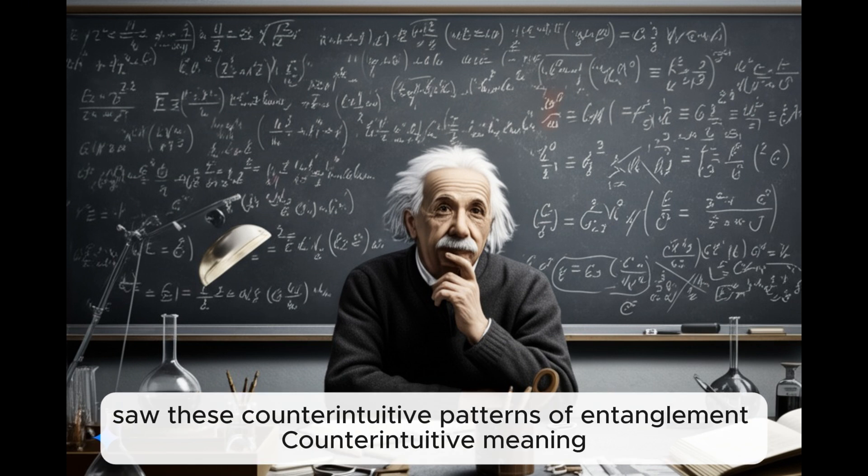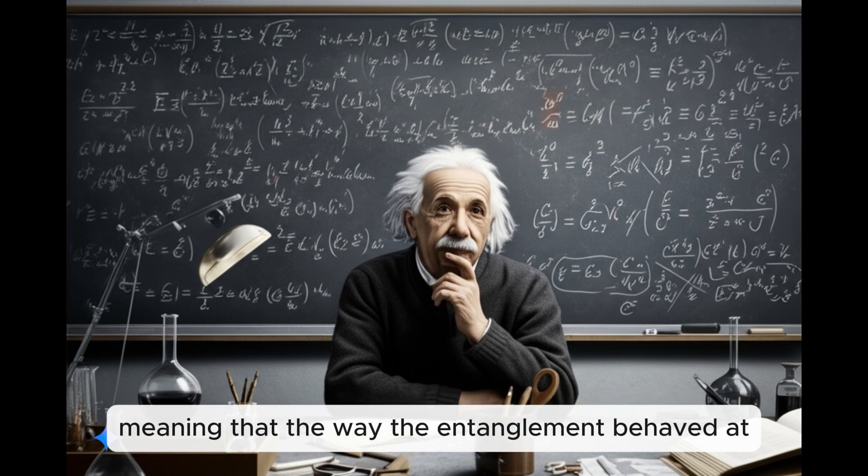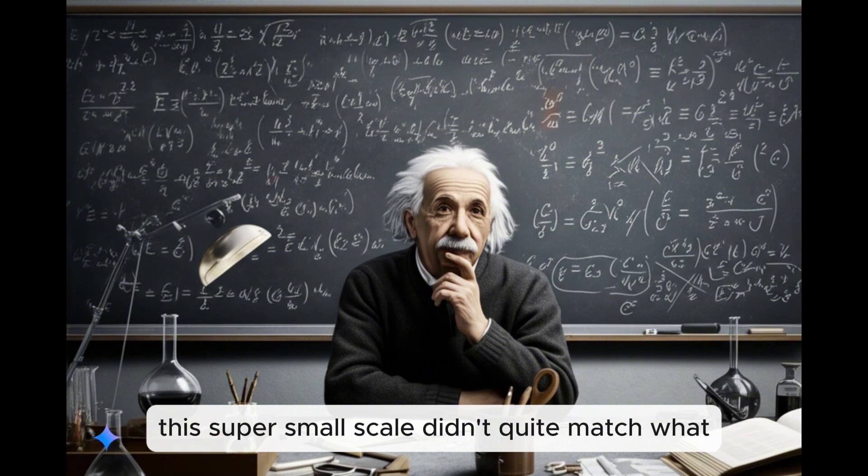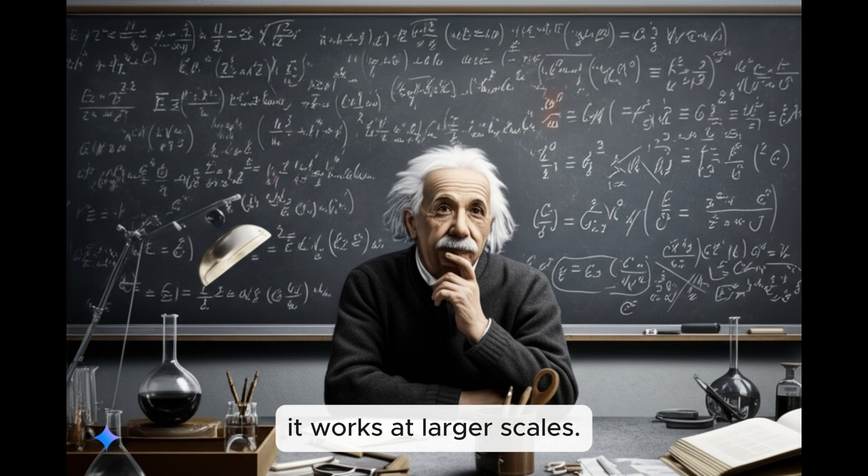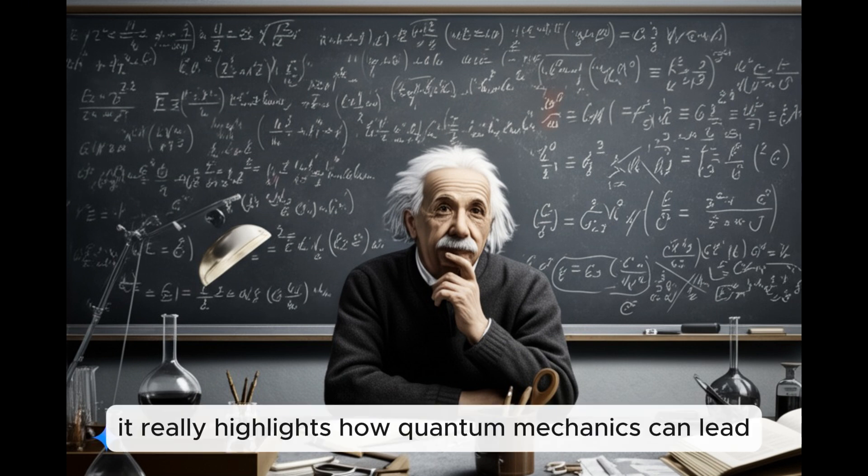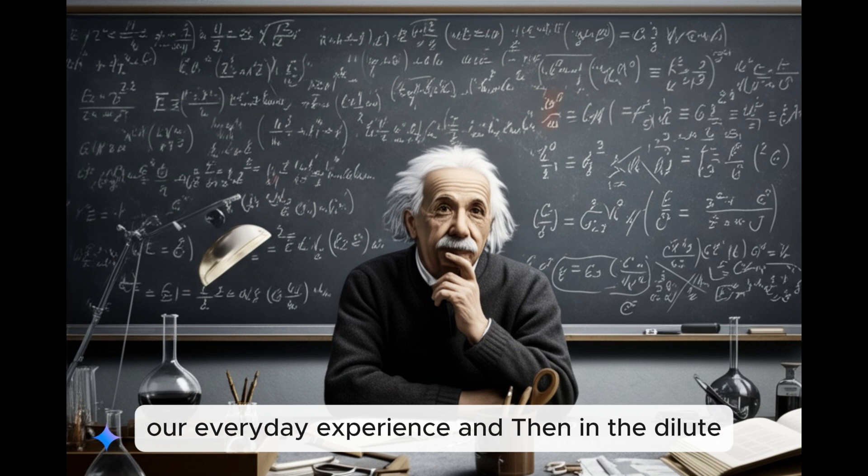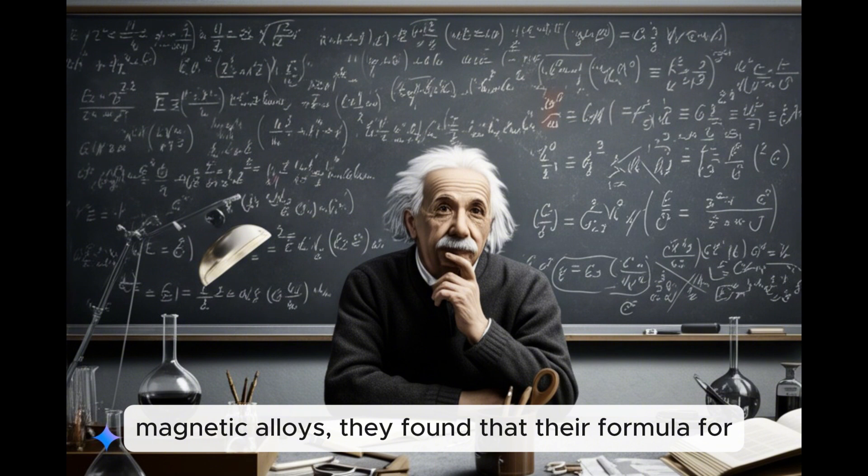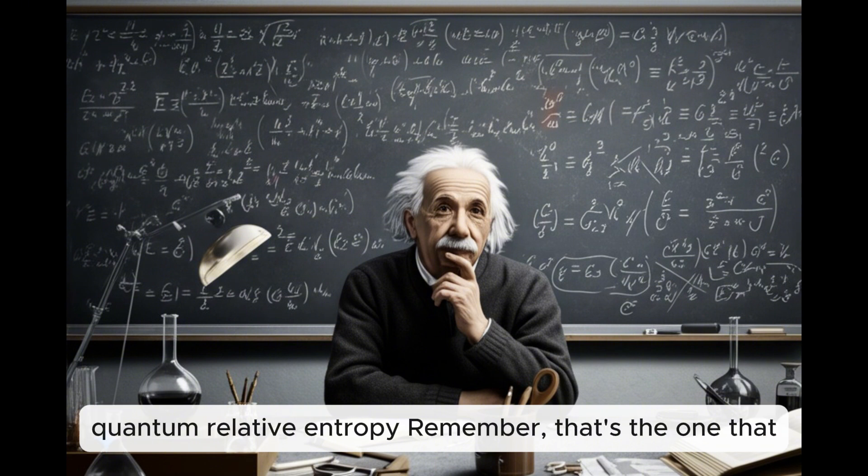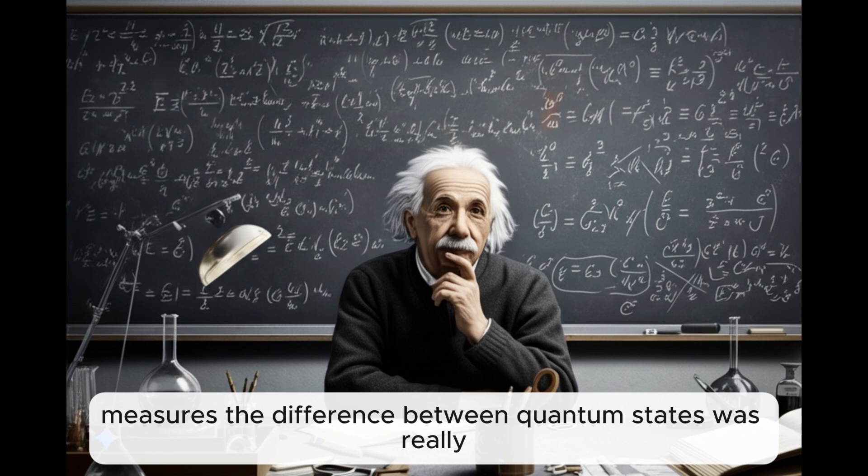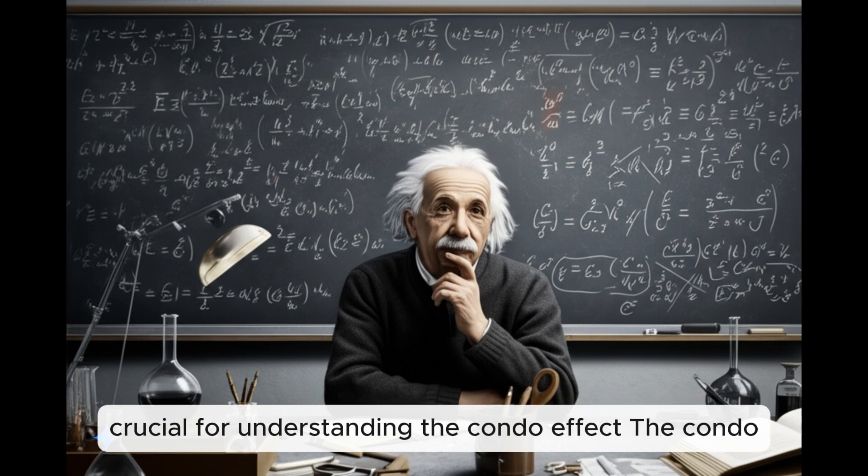So what happened when they applied the formulas to these real materials? Did it all line up perfectly or were there any surprises? Well, there were definitely some surprises, which is often the case in science, especially when you're dealing with the quantum world. So in those nanoscale artificial magnetic materials, they saw these counterintuitive patterns of entanglement. Counterintuitive meaning? Meaning that the way the entanglement behaved at this super small scale didn't quite match what we'd expect based on our understanding of how it works at larger scales.